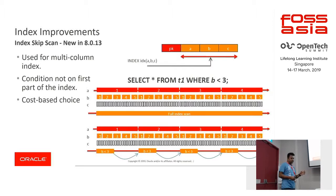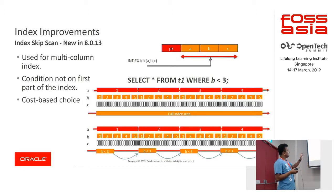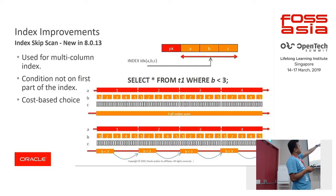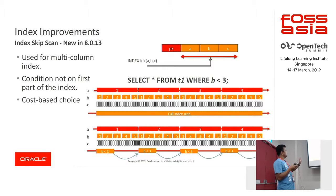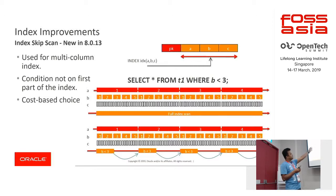Index skip scan is useful when you have a multi-column index — for example, an index defined on columns a, b, c — but your query is like 'SELECT * FROM t1 WHERE b < 3' or 'WHERE c < 3'. Previously the optimizer used to scan the whole index. With this improvement, it will not scan the whole index but will skip portions of it. This is useful only when the condition is not on the first part of the index.